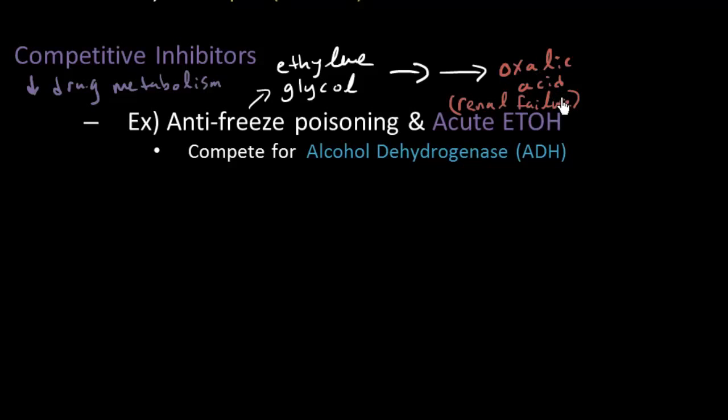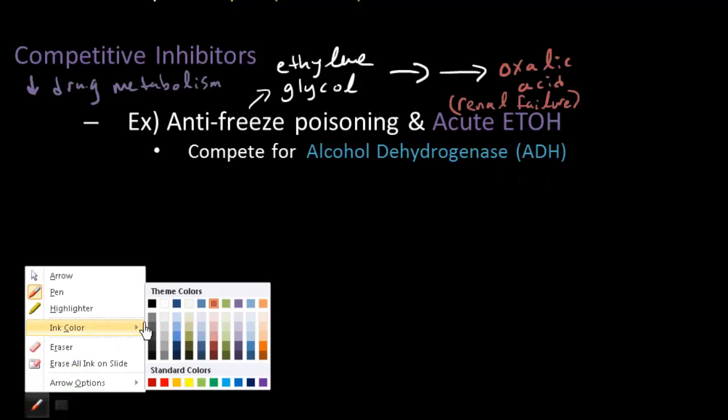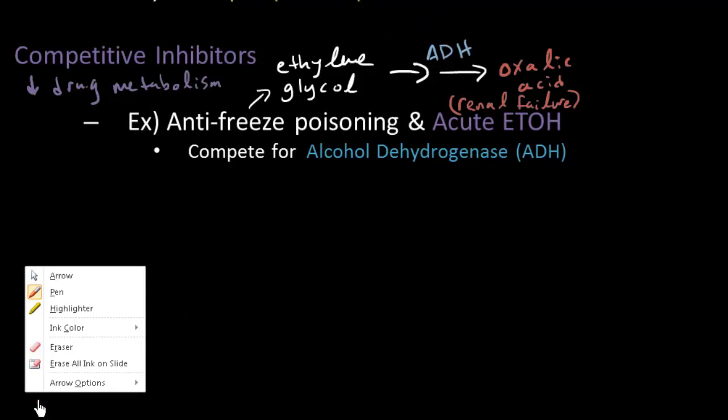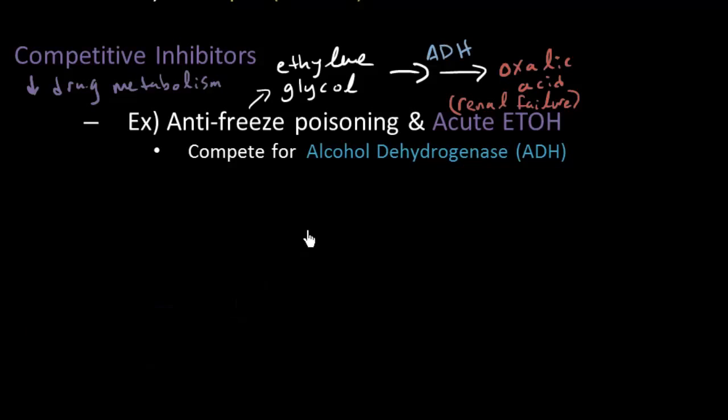And so the reason we can use acute alcohol to treat ethylene glycol poisoning is because they both compete for that same enzyme and that enzyme is called alcohol dehydrogenase, ADH. So let's draw that right here, ADH.